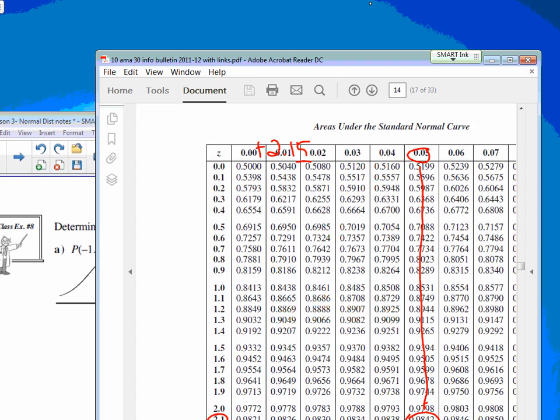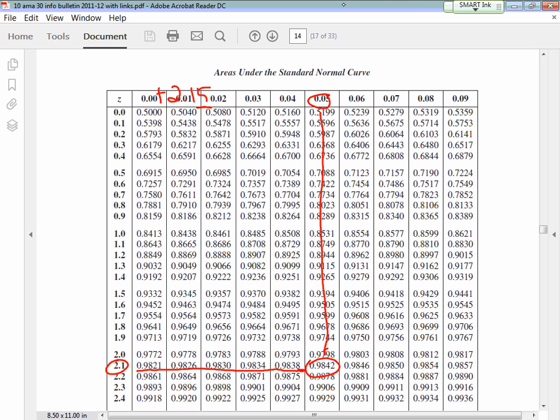So 1.83, go to your table. Don't draw lines on it. I'll draw lines because it shows how I read it. You can do this with just your fingers though. So it's 1.83, so here's 1.8 and then 3, looking right here, 0.9664.